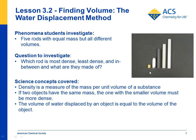In lesson 3.2, students see five rods that all have different sizes but the same mass — so they're different volumes but the same mass. That's opposite of what they did in lesson 3.1, where they had cubes that all had the same volume but different mass.